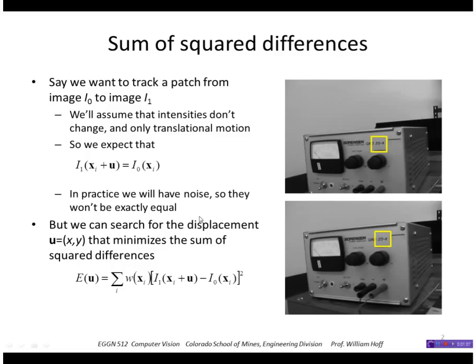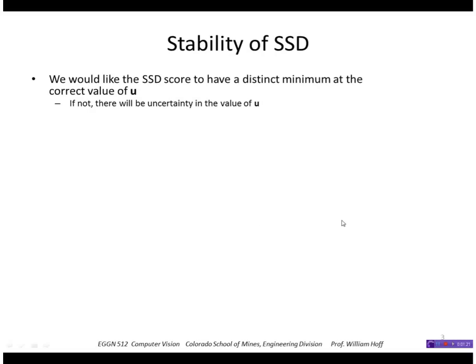But we can search for the displacement that minimizes the sum of square distances over the patch. Let's look at how stable we're able to find that displacement. We would like the sum of square differences score to have a distinct minimum at the correct value of the displacement U. If not, there will be uncertainty in our estimation of that value.